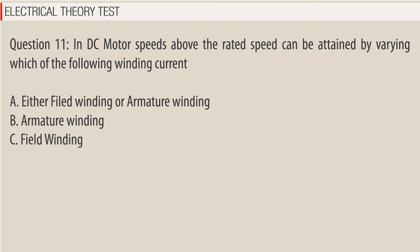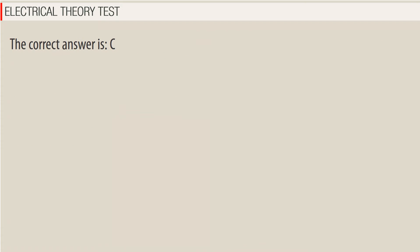Question 11: In a DC motor, speeds above the rated speed can be attained by varying which of the following winding current? A. Either field winding or armature winding, B. Armature winding, C. Field winding. The correct answer is C.